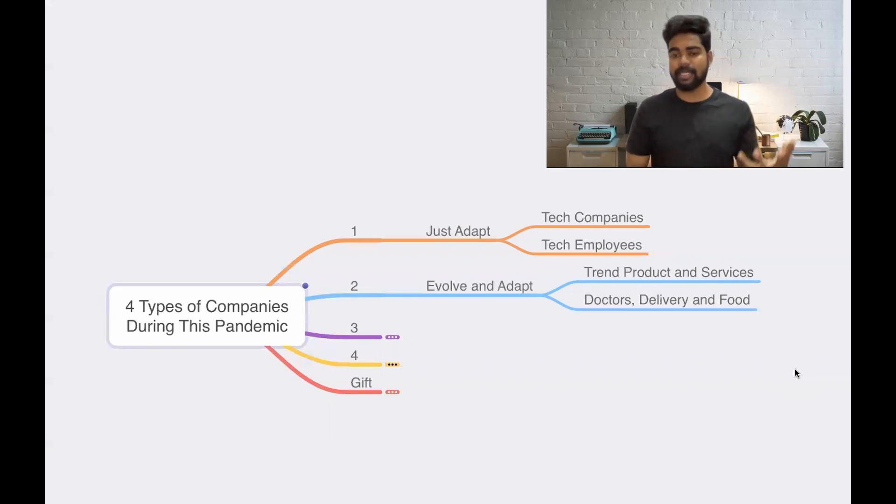We order food, we order many things and delivery people, Zomato, Swiggy and all those people always work for us all time. So that's a great thing that they have done. So they just need to evolve into something else and they need to adapt the situation and they need to work. This is second type of company which you can choose.